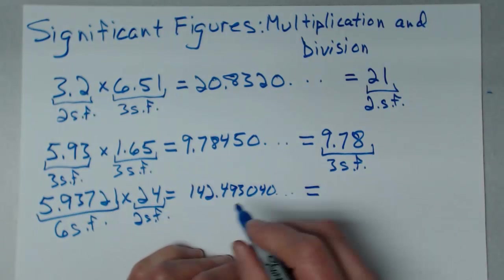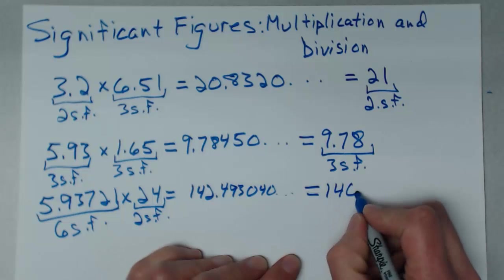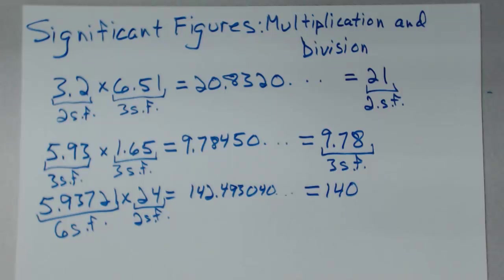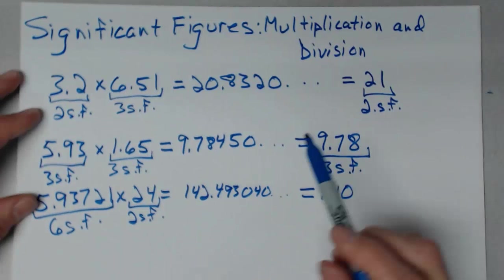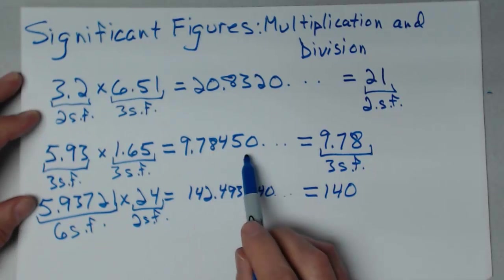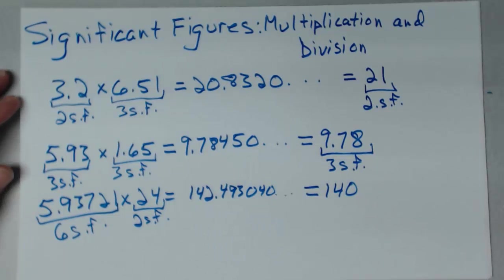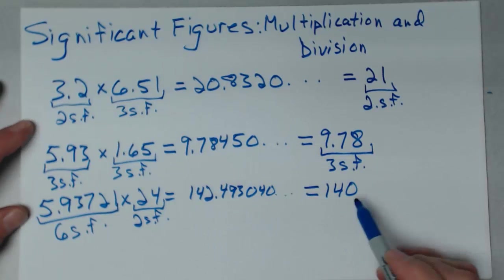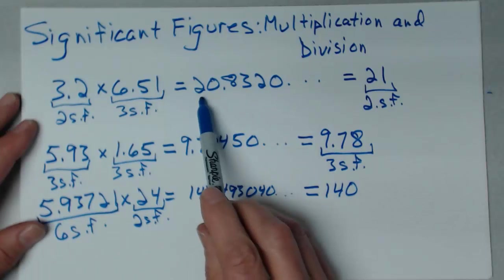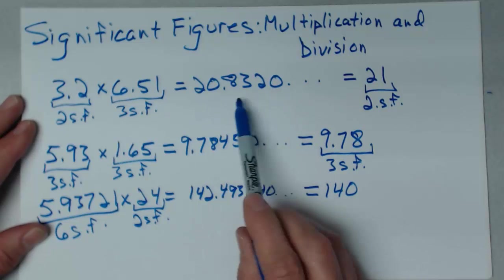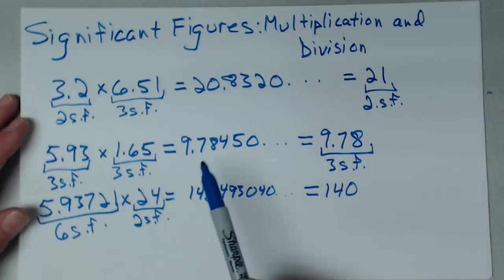So I can only write this as 140. That's a number with two significant figures — as long as there's no decimal point, that trailing zero is not significant. Writing more digits like 142 or 142.4 is not more precise; it's actually misleading. By writing more digits, you're telling your reader you have that many significant figures, and you don't.